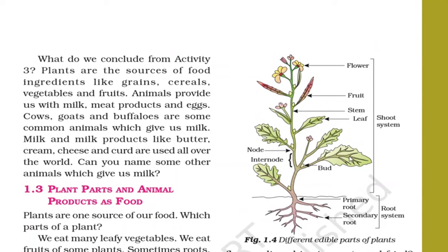Now see the picture of this plant. All plants basically have two systems — root system and shoot system. The part of the plant which is below soil is called the root system, and the part which is above soil is called the shoot system. Roots are divided into two categories: primary root and secondary root. The first root of a plant originating in the embryo is called the primary root. Secondary root is a side branch of the main root — it is also called lateral root.